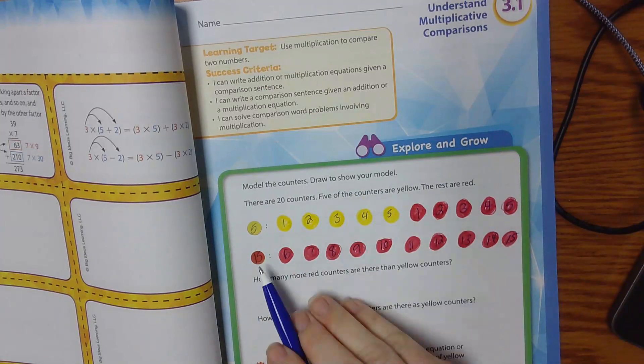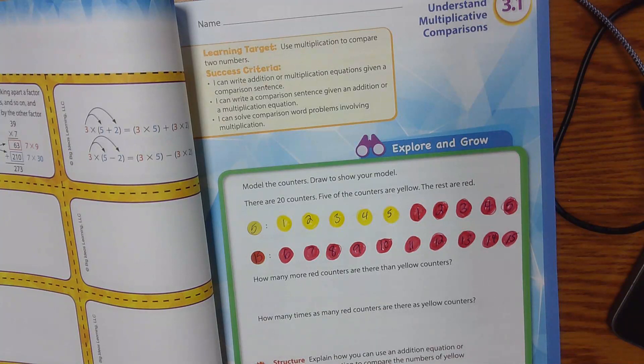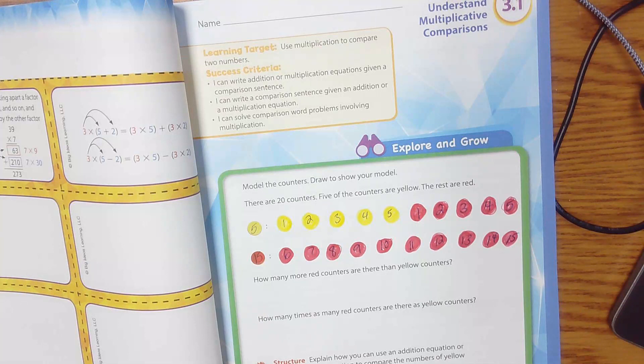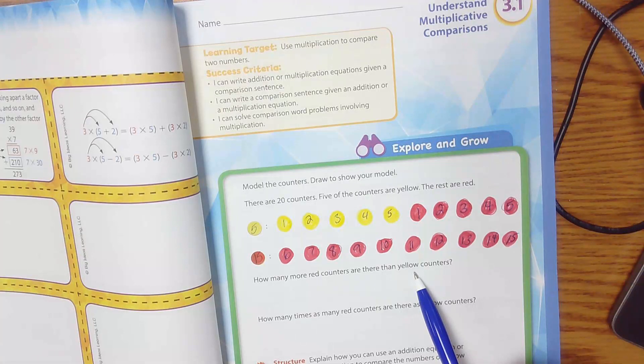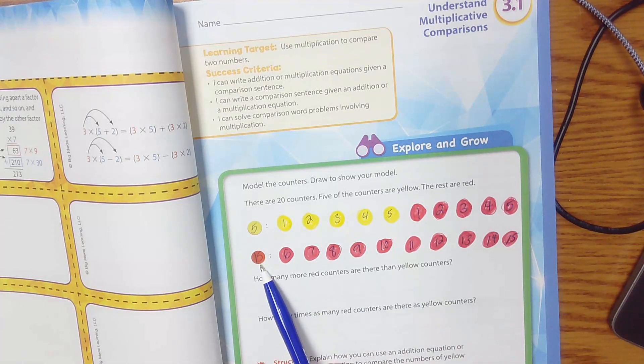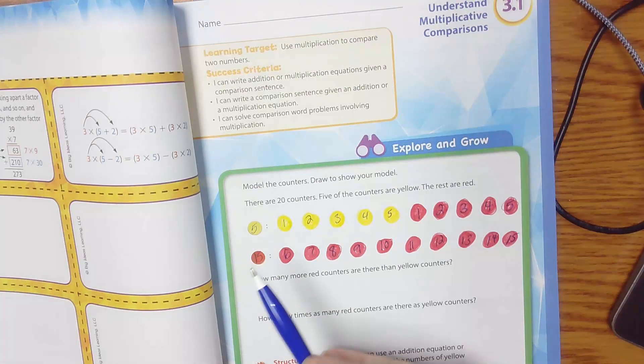If we add 5 and 15 together, do we get 20? Yes, we do. Pause it for just a minute so you can finish coloring in your counters and then numbering them. How many more red counters are there than yellow? Everyone? Seven. So there are 15 red and 5 yellow. How many more red than yellow? Ten. Ten.